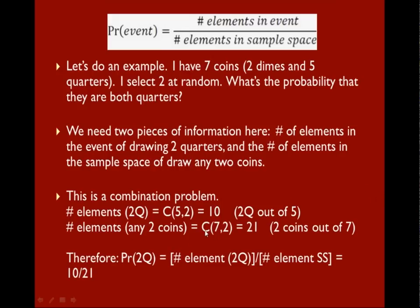The number of elements for any two coins is combination 7 choose 2. We have 7 coins to choose from and we're choosing 2, so it's 21. Now we simply divide them. The probability of drawing 2 quarters is 10 divided by 21.